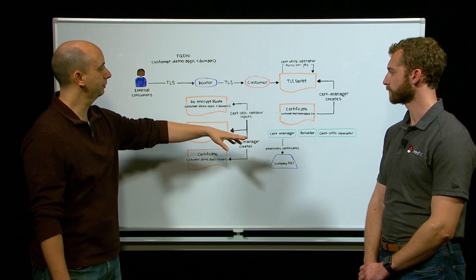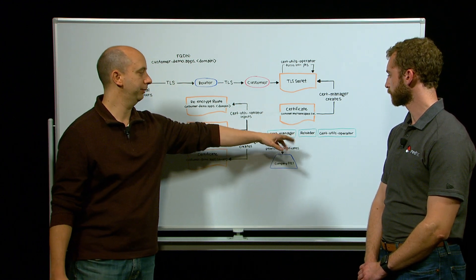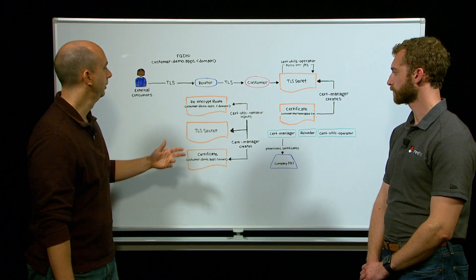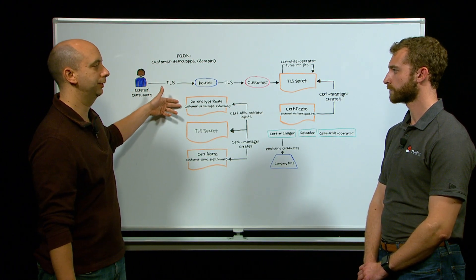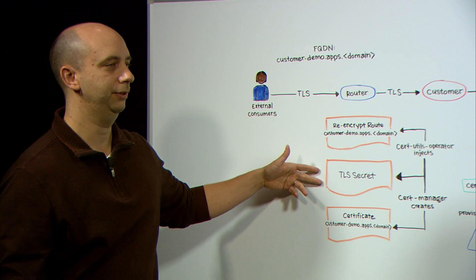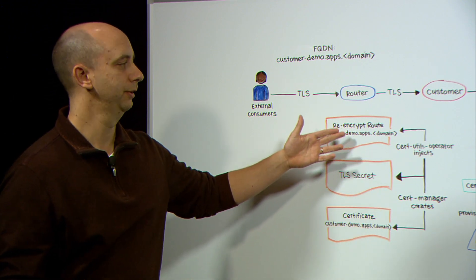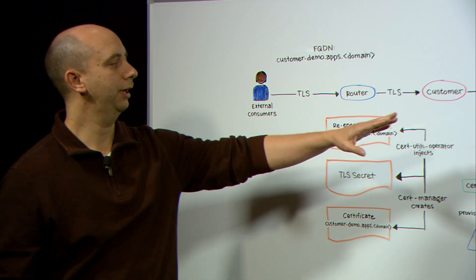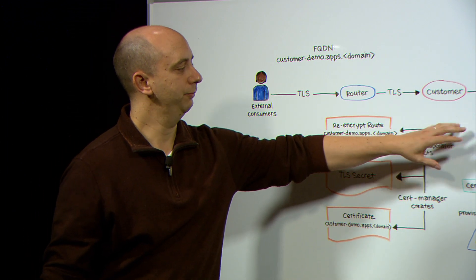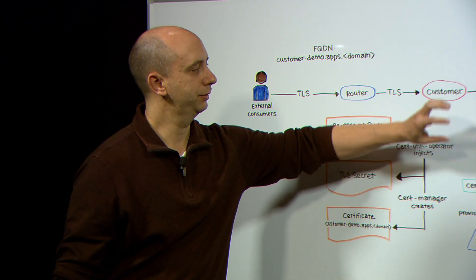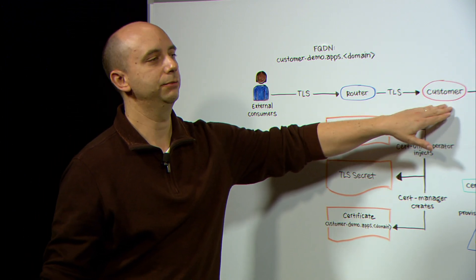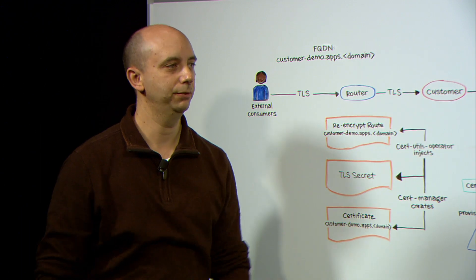In order to do that, we can use another operator called the UTS operator. This operator, based on an annotation that we put in the route, will take the TLS material and inject it in the route. On the other side, on the pod side, we have again requested the certificate and the certificate is in the secret, and now we can simply mount the secret to the pod.